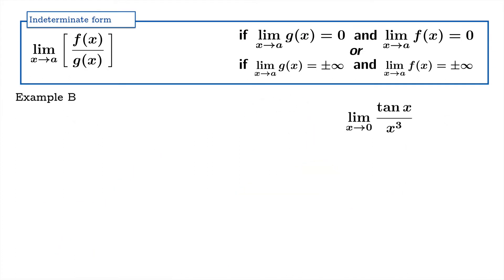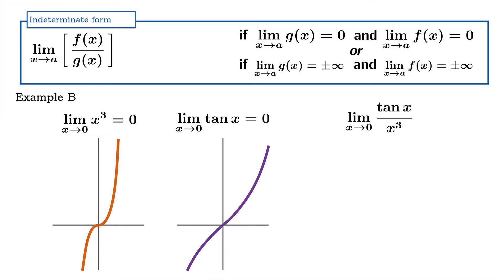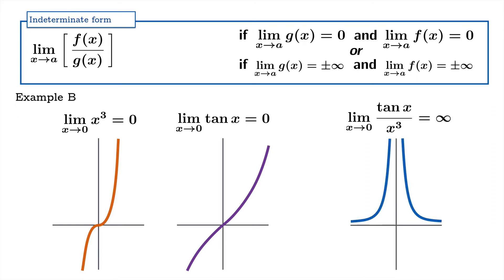Example B: tan(x) over x cubed. Once again, the limiting value as x approaches zero of both the numerator and the denominator is zero, so we have a zero over zero form. In this case, the limiting value as x approaches zero is infinity — in other words, this limit diverges to infinity.